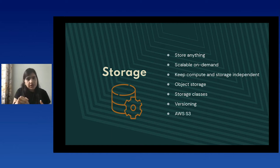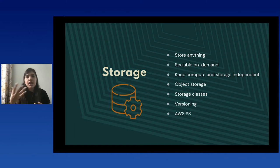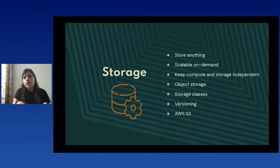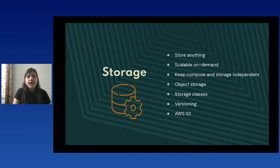Versioning is also important. We have multiple data streams ingesting into our data lake, and there may be chances that these streams override each other's data. For that purpose, we should have versioning enabled at the data lake layer so that we know which version was overwritten by which data stream. At Episource, we use AWS S3 for our storage solution, and S3 provides all of these features with proper costing.